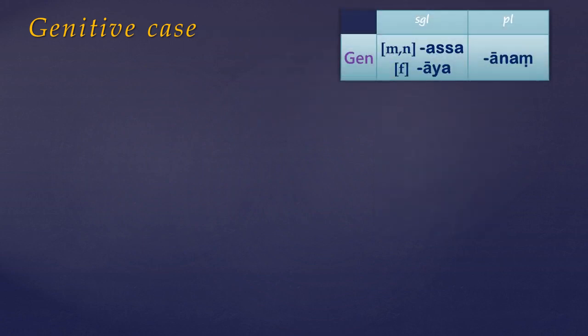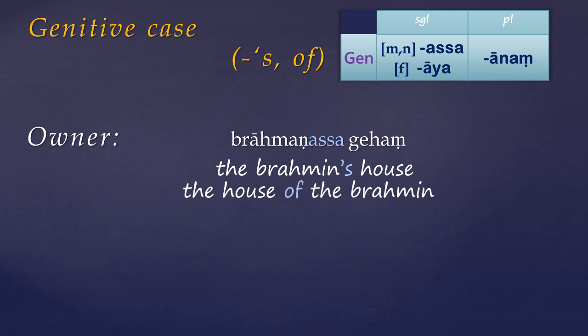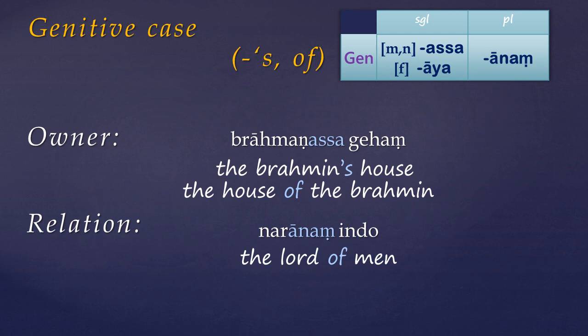Now the genitive case is extremely common in Pali, and its most basic sense is that of possession or ownership of something. In English it's usually created by adding an apostrophe 's' to a word, or preceding that word by 'of' — as in 'the Brahmin's house' or 'the house of the Brahmin.' Usually the genitive noun is placed immediately before the word or phrase which it qualifies, and notice that it's the owner that is marked in the genitive, not the thing owned. More generally the genitive can indicate relationships between people, objects, parts to wholes, and so on — it has many shades of meaning.